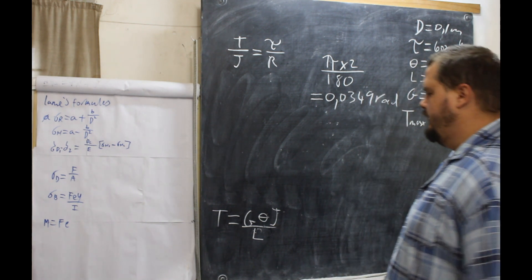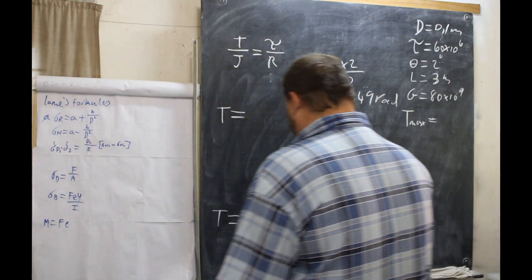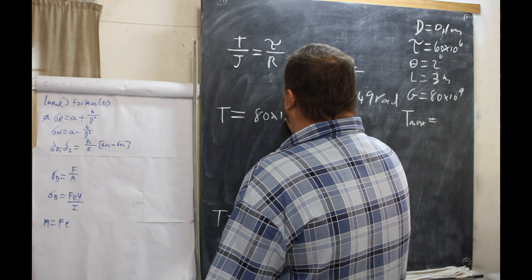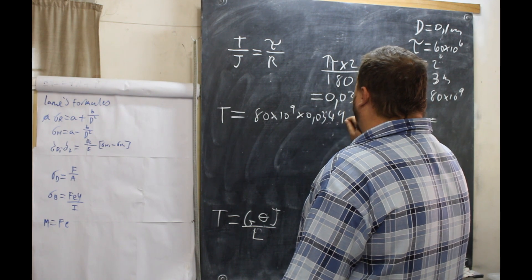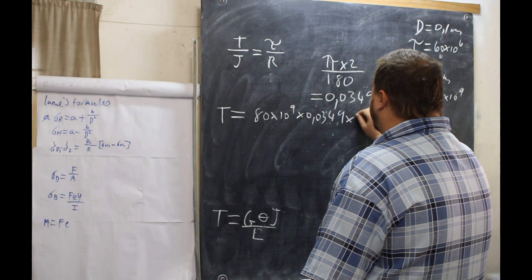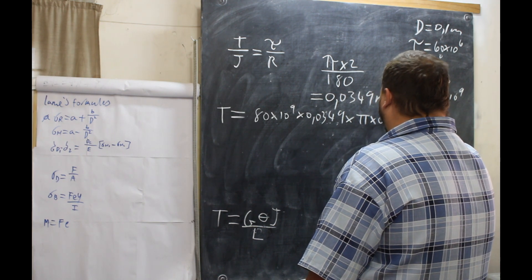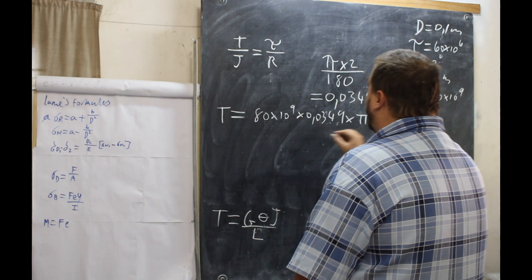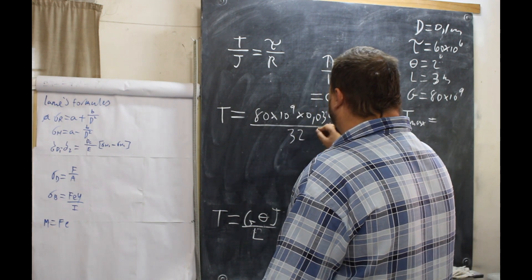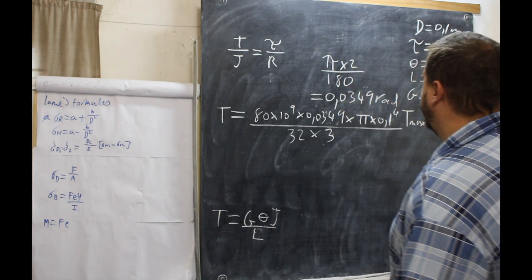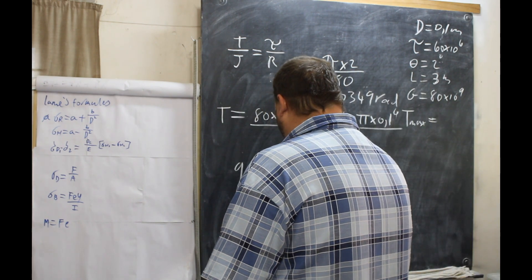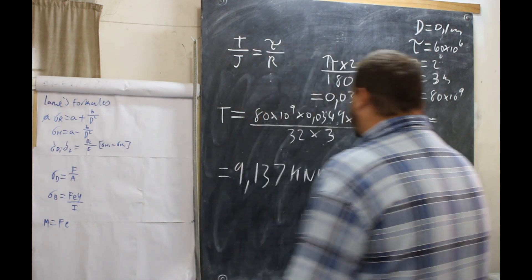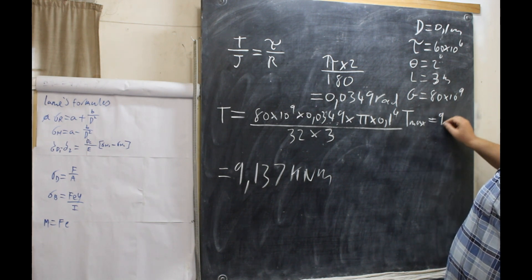So T equals G, which is 80 × 10⁹, times 0.0349, times pi times 0.1 to the power of 4, all over 32, times 3. Our torque is 9,137 kilonewton meters. That is the T max we will be using going forward — 9,137 kilonewton meters.